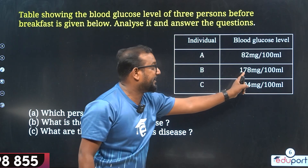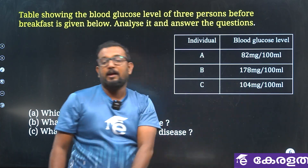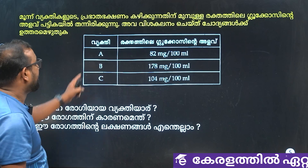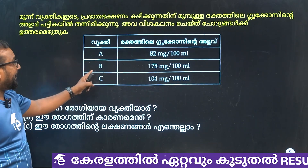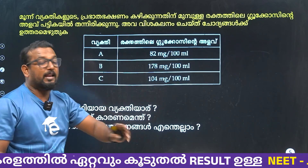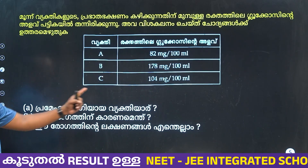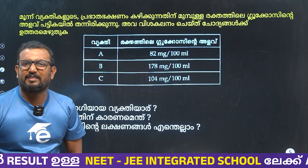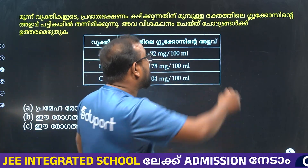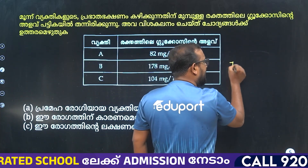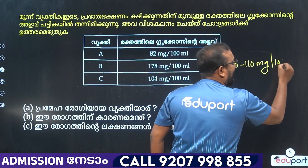B's glucose level is 178 mg per 100 ml. C's glucose level is 104 mg per 100 ml. The normal blood glucose level is 70 mg per 100 ml.